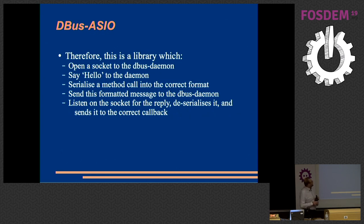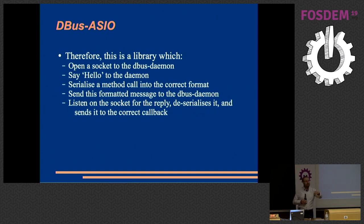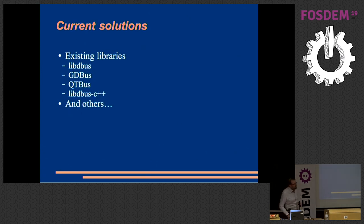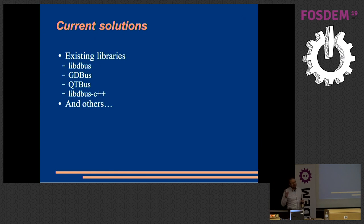D-Bus ASIO is a library that allows you to serialize a function call and communicate to the D-Bus daemon before passing it on to another application. As you can probably guess, it already exists. There are lots of libraries that do this, but as always, they're never quite what you need — they don't quite match the use case.